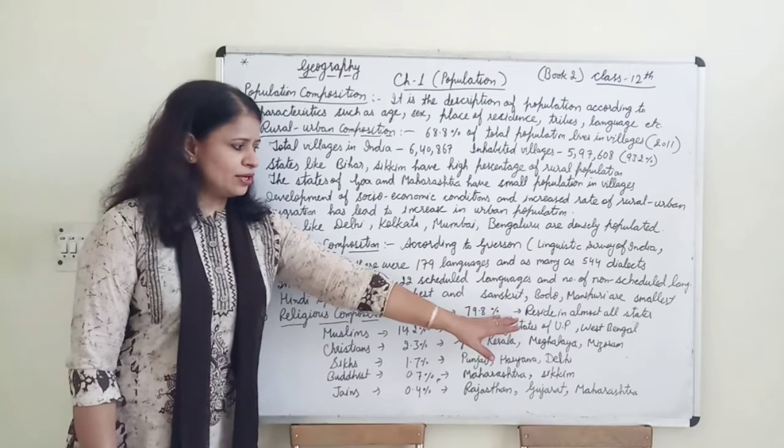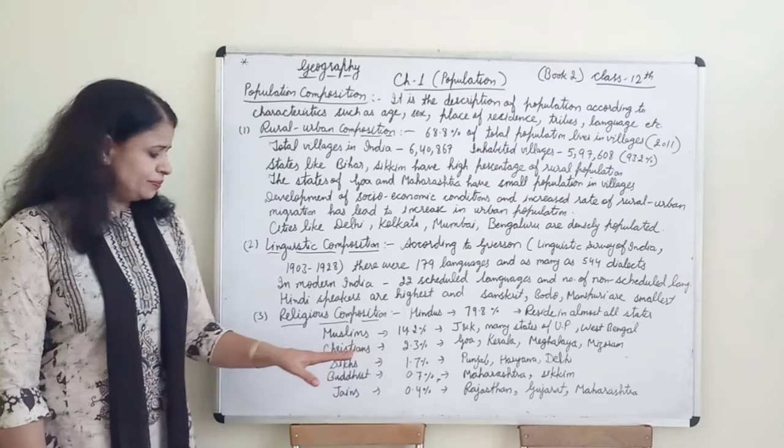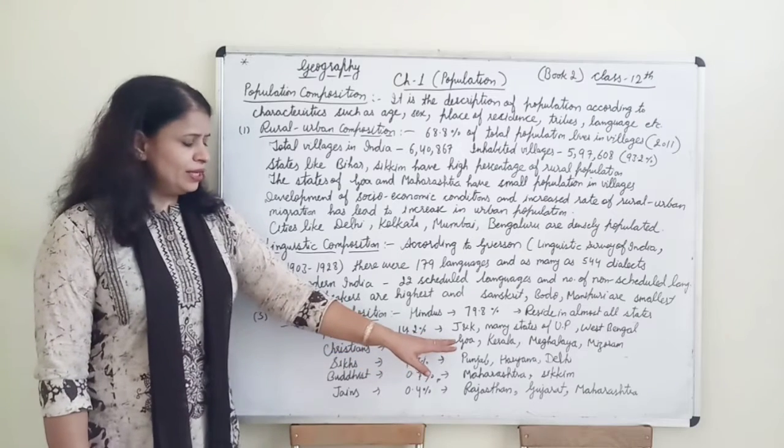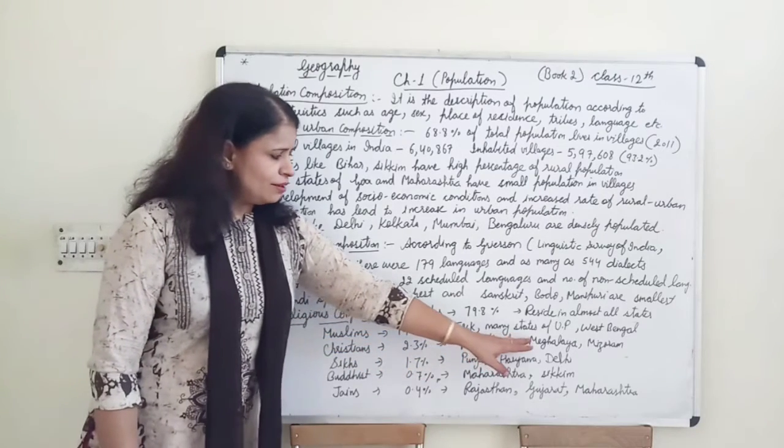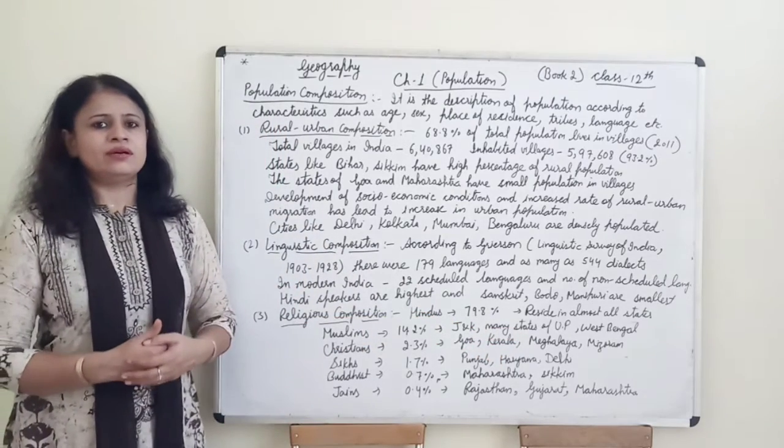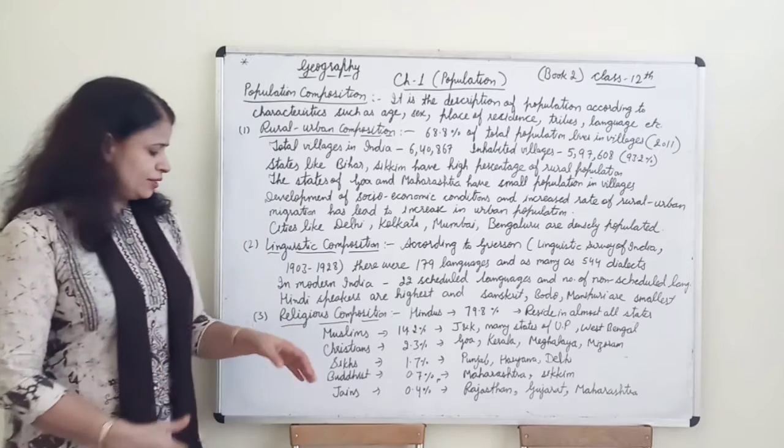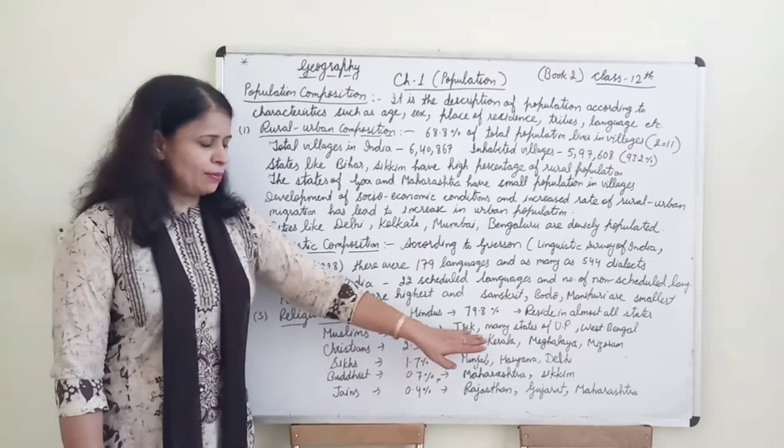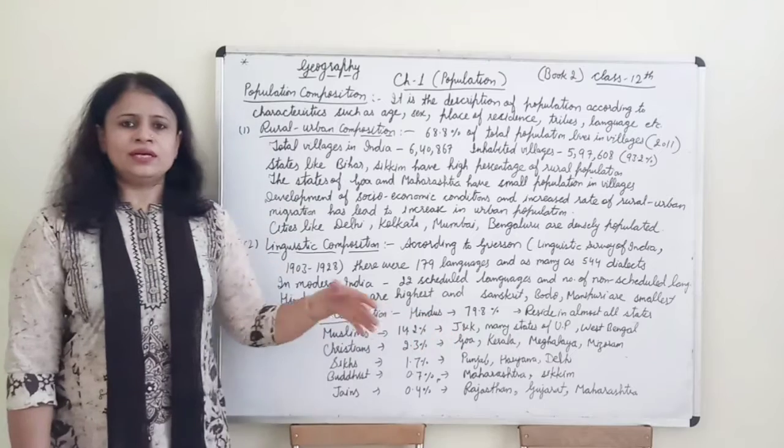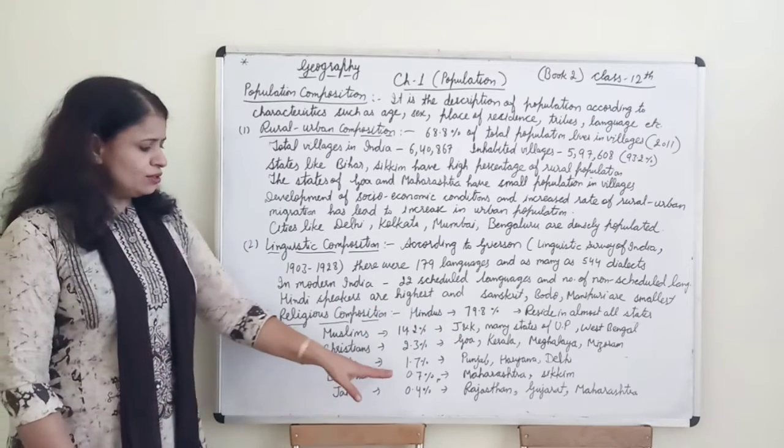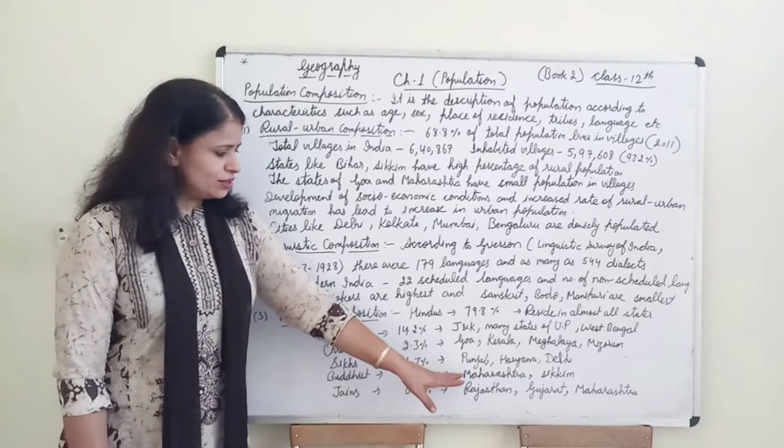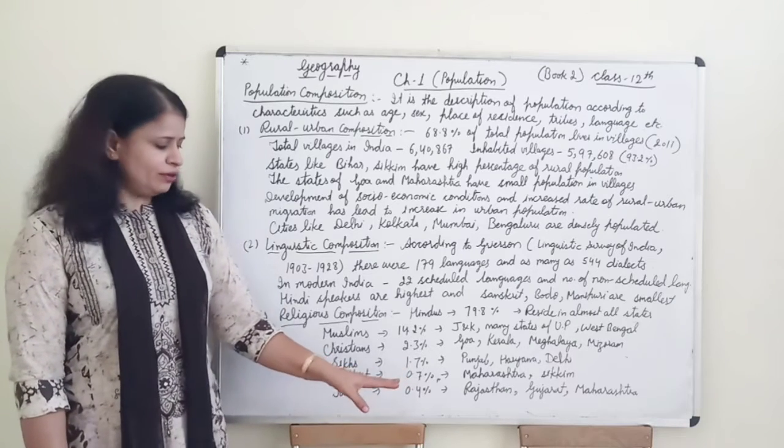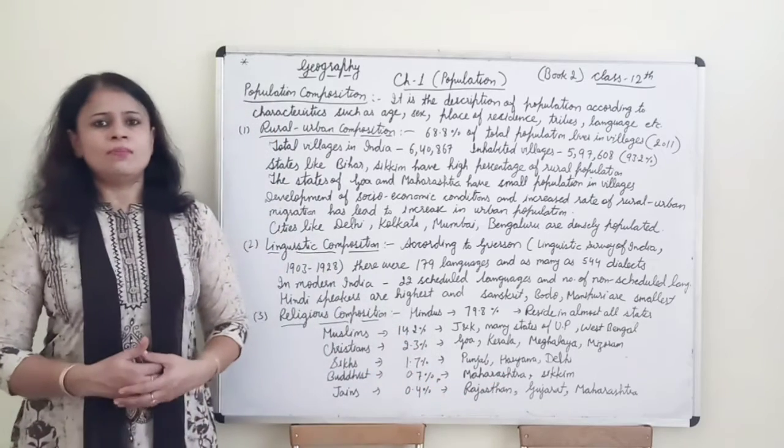Muslim dharam 14.2% which mainly concentrated in Jammu Kashmir, Uttar Pradesh states and West Bengal. Next religion is Christian Buddhist smaller proportion only 2.3% mainly concentrated in Goa, Kerala and Meghalaya, Manipur, Mizoram. Sikh they have also very small proportion only 1.7% in Punjab, Haryana and Delhi. Buddhist only 0.7% mainly concentrated in Maharashtra. Jain Dharam follow only 0.4% and lives in Rajasthan, Gujarat and Maharashtra.